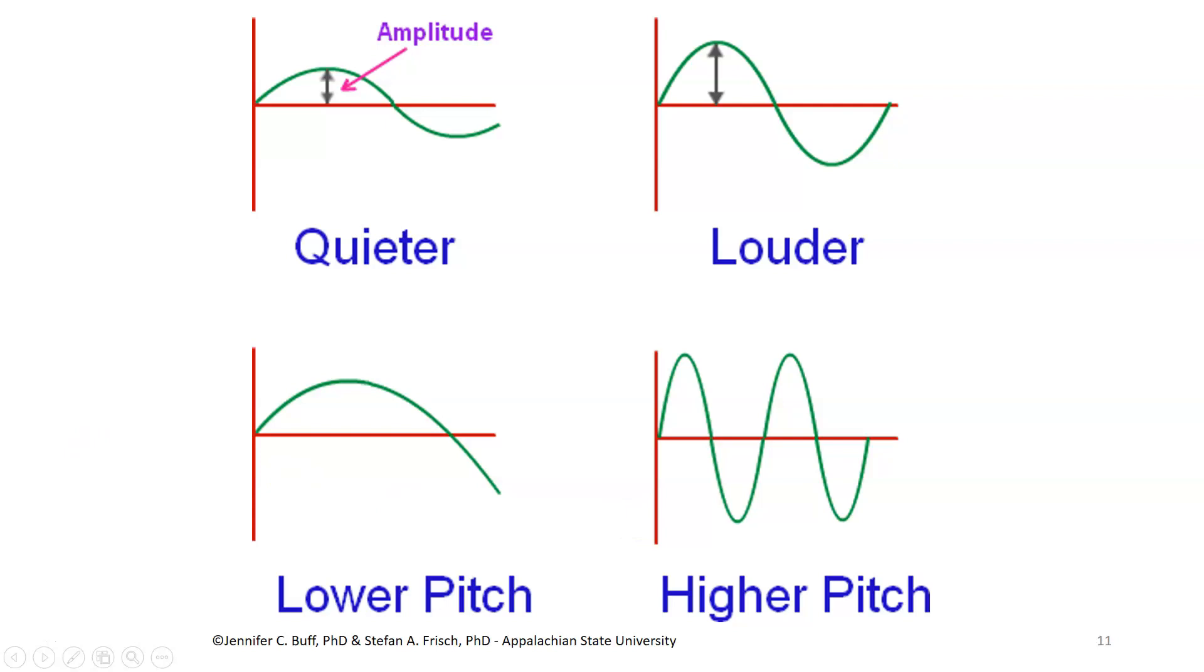If we look at waveform graphs of simple periodic sounds, the two graphs at the top for a sound of the same frequency shows a difference in amplitude, on the basis of which one has bigger displacement in terms of pressure along the vertical axis. So the upper left sound would be quieter, and the upper right sound would be louder.